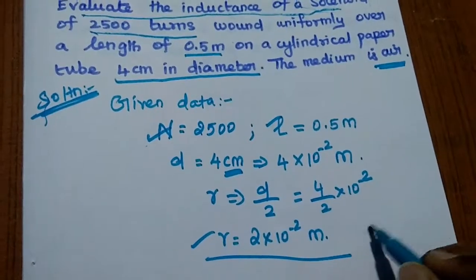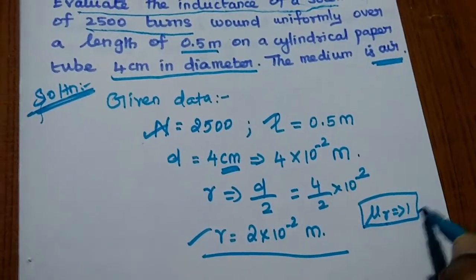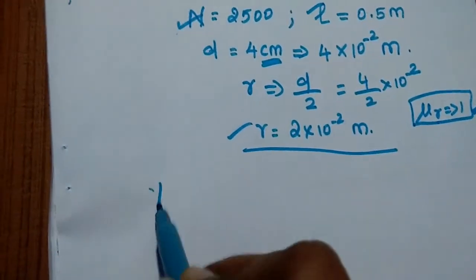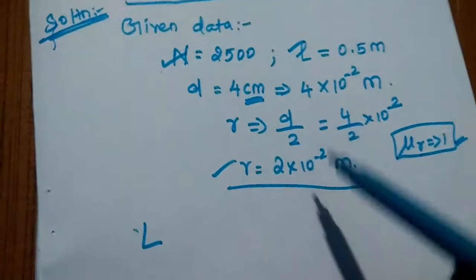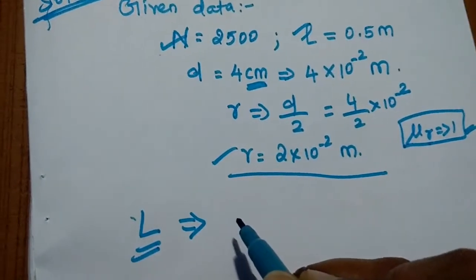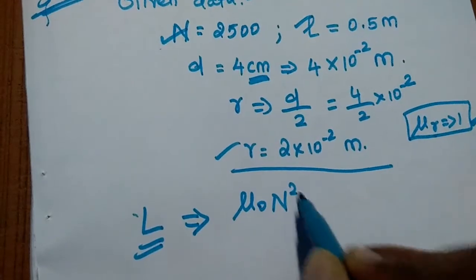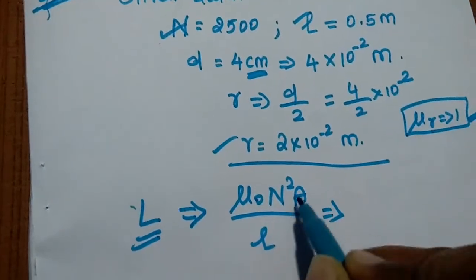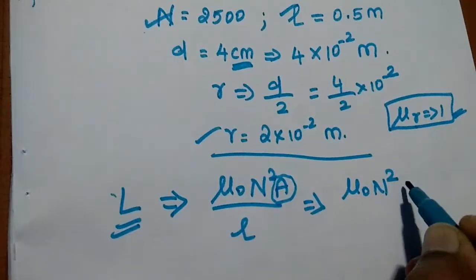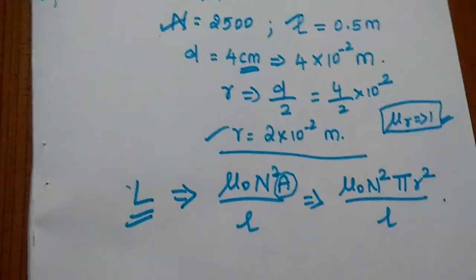The medium is air, which means mu R value is 1 here. We are going to evaluate the inductance of the solenoid. The formula is L equals mu naught N squared A by L, where A can be written as pi R squared. So L equals mu naught N squared pi R squared divided by L. Now we substitute the values: mu naught is 4 pi into 10 to the power of minus 7, N squared is 2500 squared, pi into R squared is pi into 2 into 10 to the power minus 2 the whole square, divided by L which is 0.5 meter.